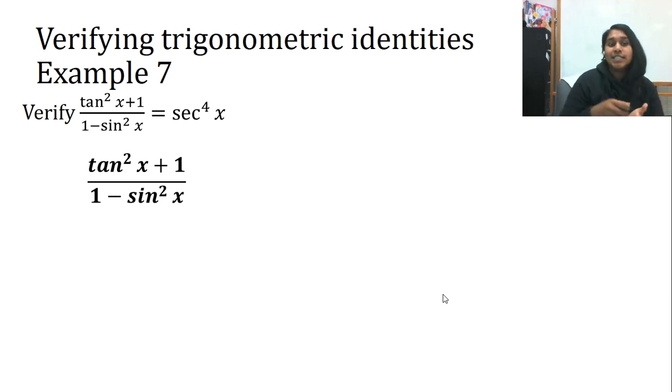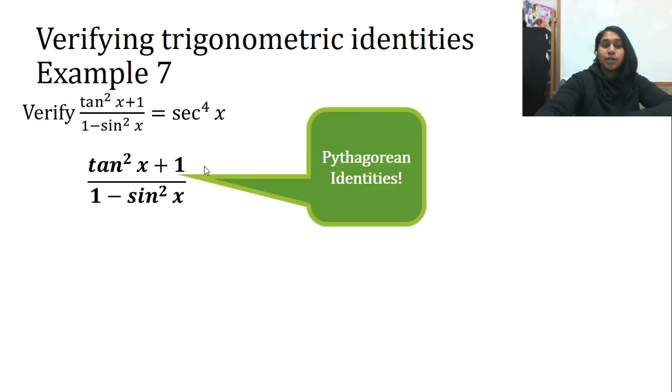I see a lot of different things. Tangent could be both reciprocal and quotient. But because I see squareds, wouldn't it be smart to start with Pythagorean identities? Tan squared plus one equals secant squared. One minus sine squared equals cosine squared.